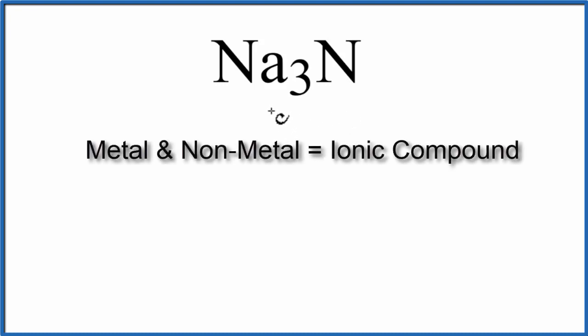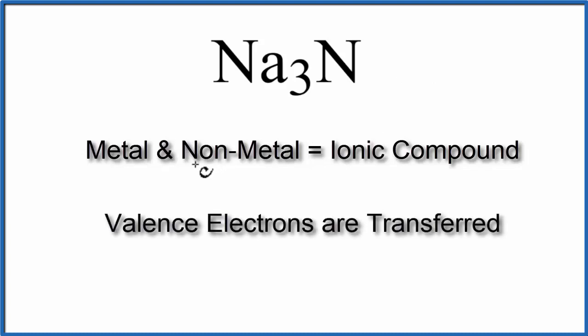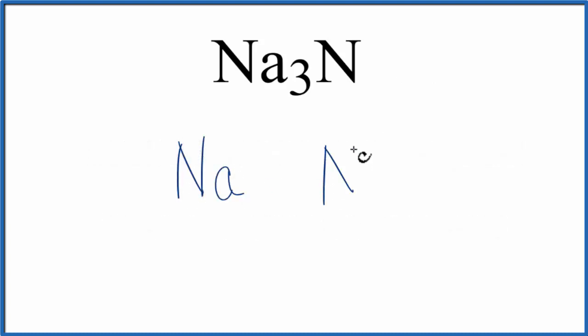So in an ionic compound, valence electrons are transferred from the metal to the nonmetals. So let's write Na and then N. But this 3 here means we have 3 sodium atoms.